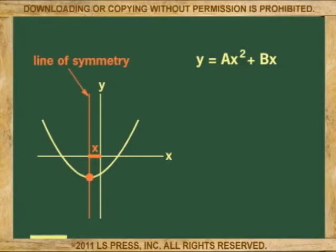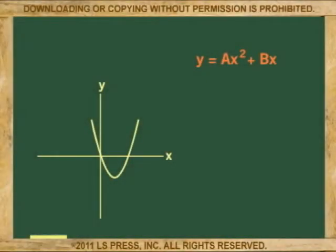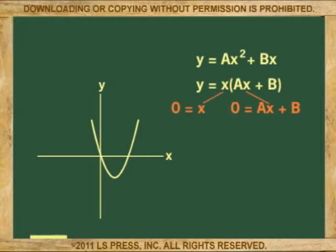So, we take the y equals ax squared plus bx equation and factor x, giving us y equals x times ax plus b. We find the zero values by saying 0 equals x and 0 equals ax plus b. Solving for x, b becomes negative b on the other side and a is divided. So, these are the x-intercepts when the value of y is zero.